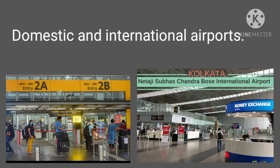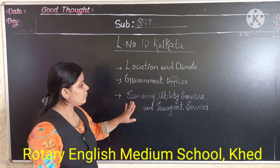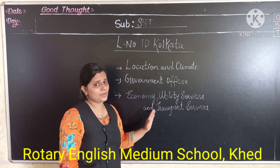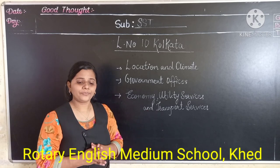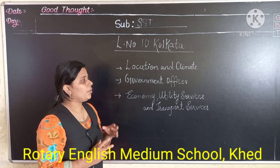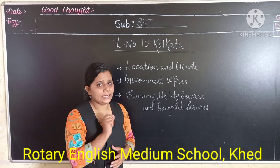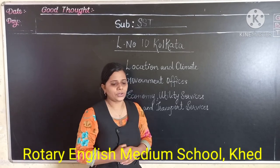Hope you have understood about the location, climate, government offices, and economic utility service and transport services in Kolkata. Now, what you are going to do is read the textbook and underline the important points. Now take down your new words.